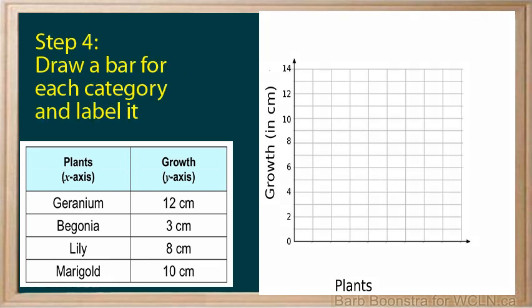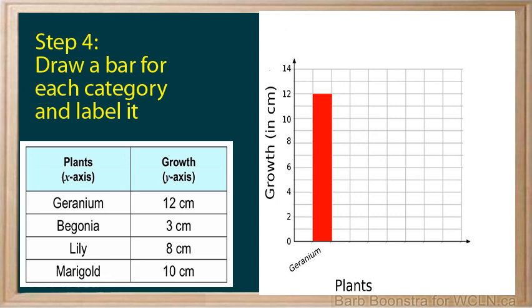We are now ready to put in the bars. Draw a bar for the geraniums. The growth is 12 centimeters, so the bar reaches to that line. Label the bar. Now add the begonias. We have left a space between the two bars and the bars are the same width. The next bar is for the lilies. Use the same space between the bars and the same width of bars as before. Finish with the marigolds.